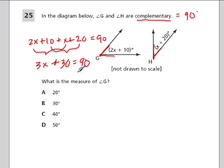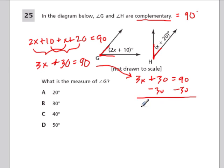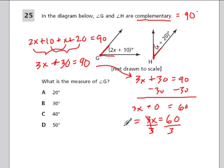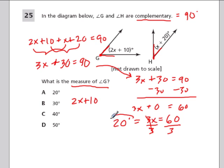To figure out x, subtract 30 from both sides: 3x plus 30 equals 90, so 3x equals 60, then divide both sides by 3 to get x equals 20. Don't be tempted to circle 20 degrees, because they want the measure of angle g, which is 2x plus 10. Plugging in: 2 times 20 plus 10 equals 40 plus 10, which is 50 degrees.